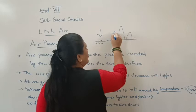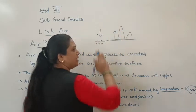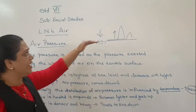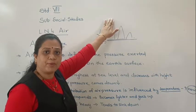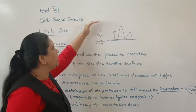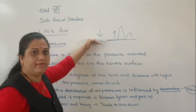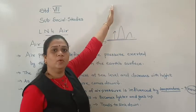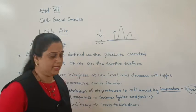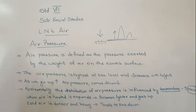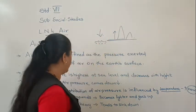As we move above the earth's surface to higher places, the air pressure decreases. So as we go up, the air pressure comes down. The air pressure is highest at sea level and decreases as we move upward.